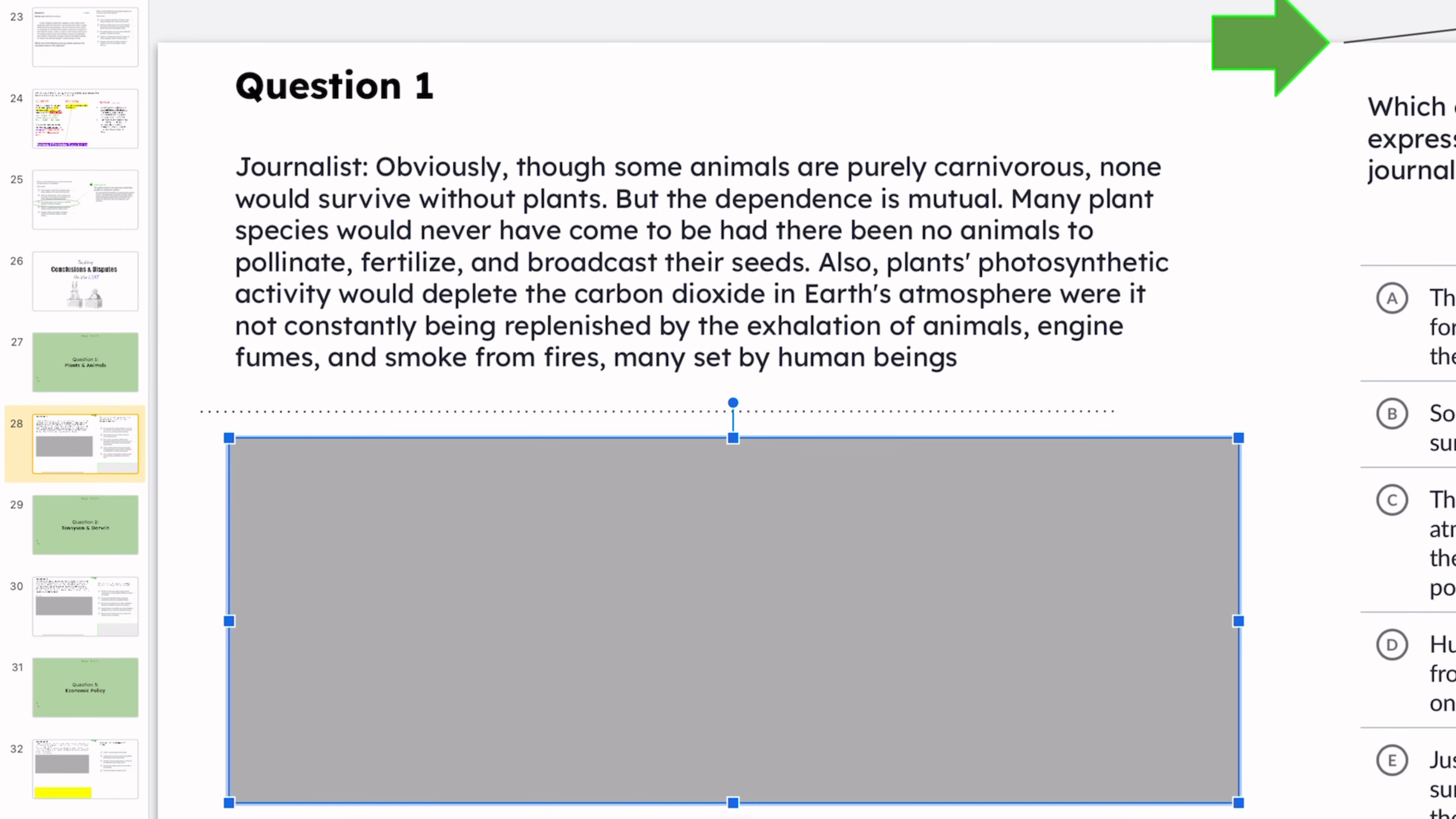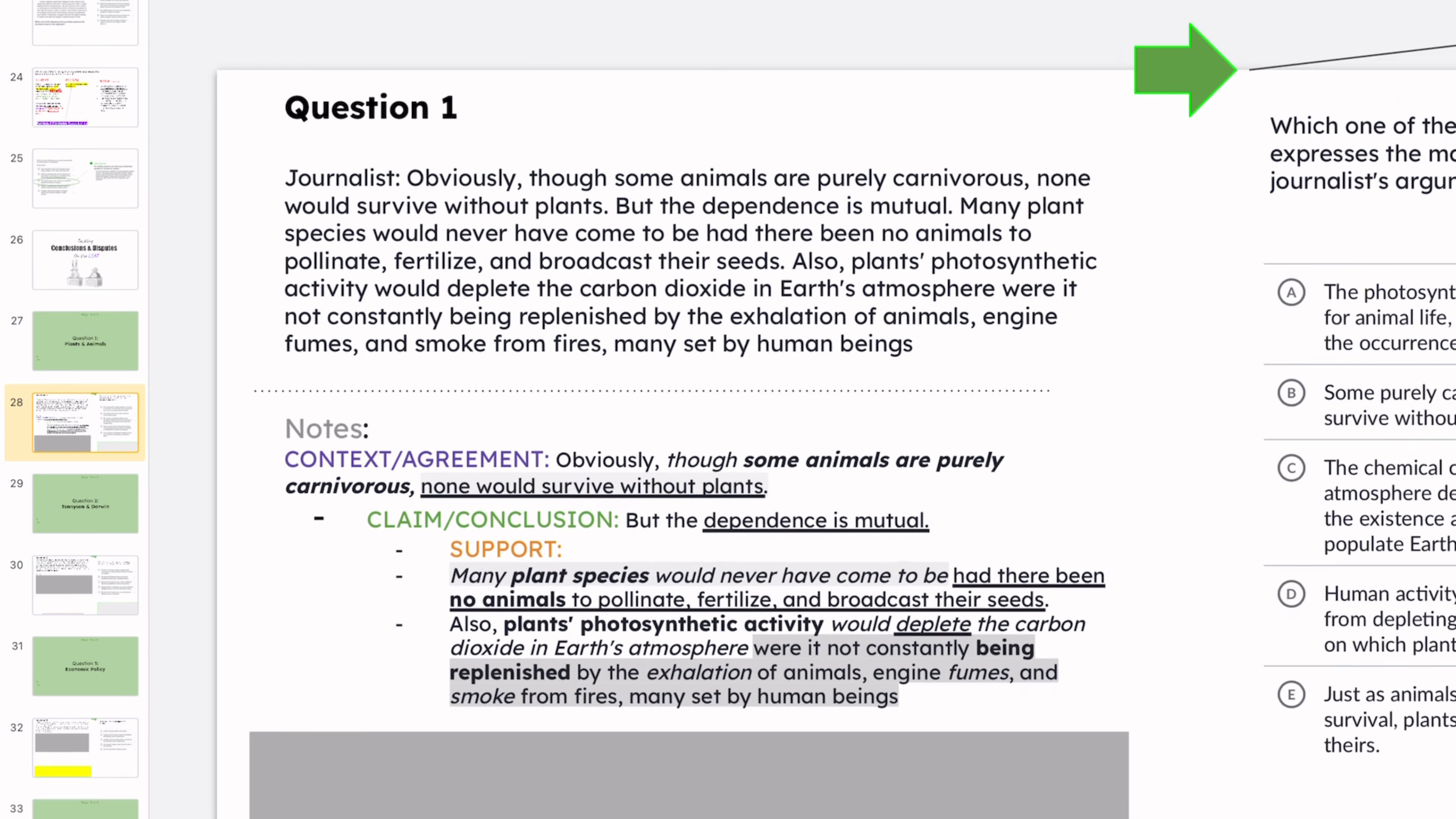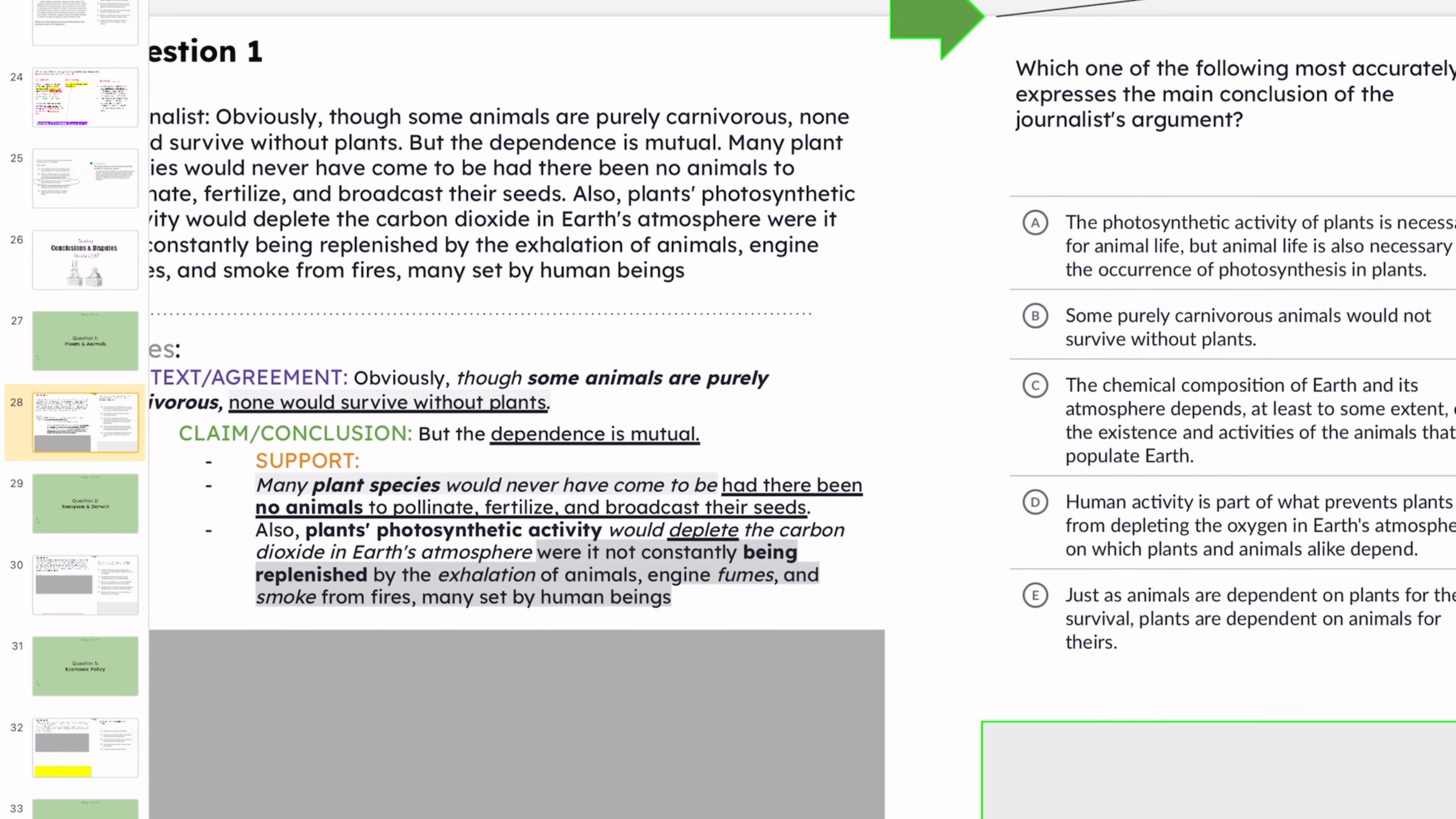All right. So in this, I'm very visual, so I just copy and paste and kind of just dissect it. So I found the claim conclusion seems to be that the dependence is mutual, right? That plants, yes, we need plants and we also need animals. That's their main point, right? So now we're going to check the options to see which one matches the conclusion that we came up with, which is the dependence is mutual.